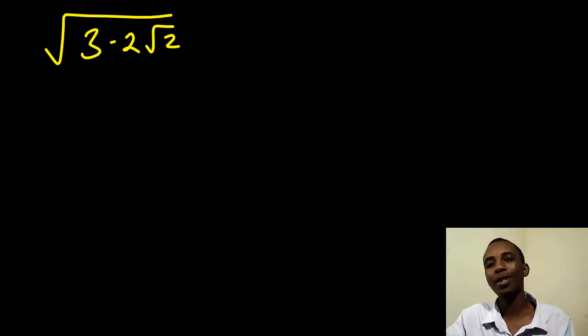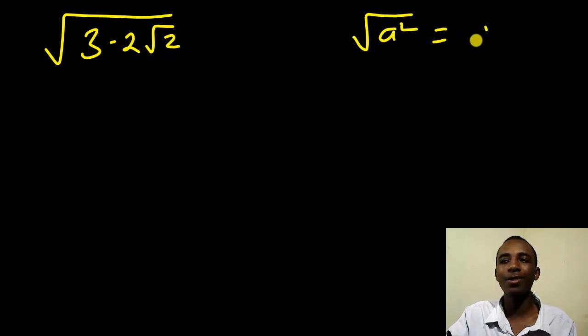Right, let's find the square root of 3 minus 2 root 2. Now this has two solutions we are going to find out in this video. Because we know that if you have something like the square root of s squared, this is always equal to s because the square and the square root are inverses of one another.